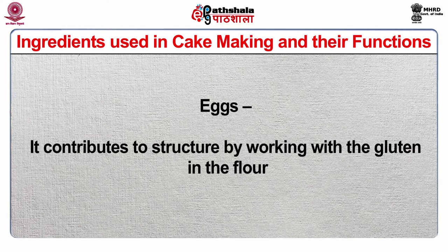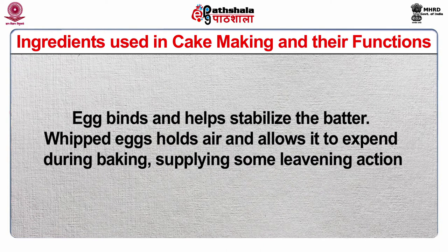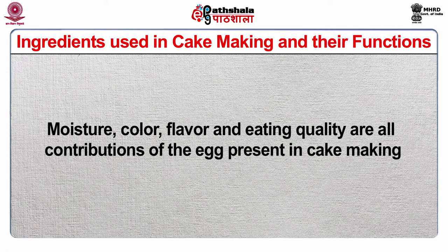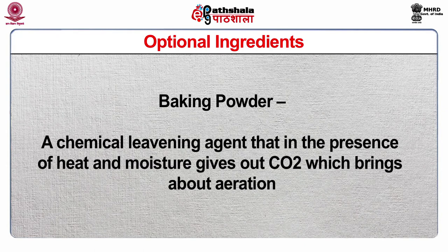Eggs contribute to structure by working with the gluten in the flour. Egg binds and helps stabilize the batter. Whipped eggs hold air and allow it to expand during baking, supplying some leavening action. Moisture, color, flavor and eating qualities all contribute to the egg present in cake making. The other optional ingredients are baking powder, a chemical leavening agent that in the presence of heat and moisture gives out carbon dioxide which brings about aeration.